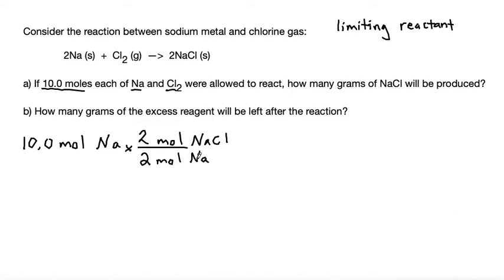And I put the moles of sodium on the bottom so it would cancel and the moles of sodium chloride on the numerator because that's what I want to convert to. And the 2's came from the coefficients in the balanced reaction. So that's the first step. The question is asking how many grams of NaCl, so let's go ahead and convert from moles of NaCl to grams. The relationship between moles and grams is our molar mass. The molar mass of sodium chloride is 58.44 and that's adding the molar mass of sodium and the molar mass of chlorine together.